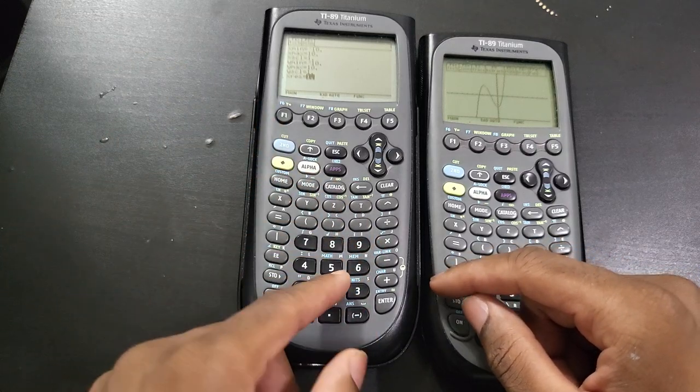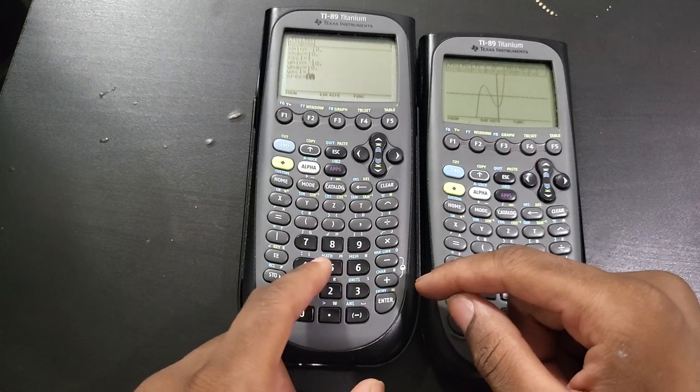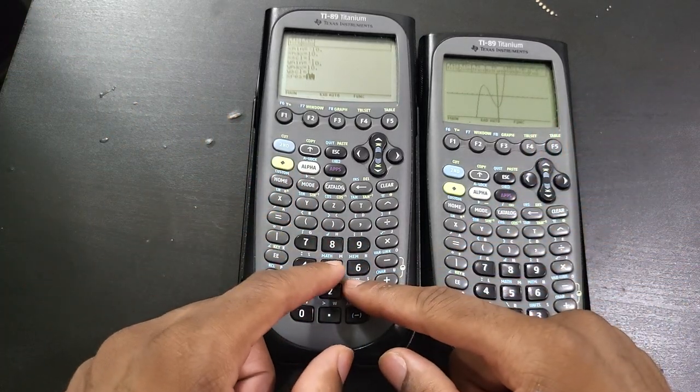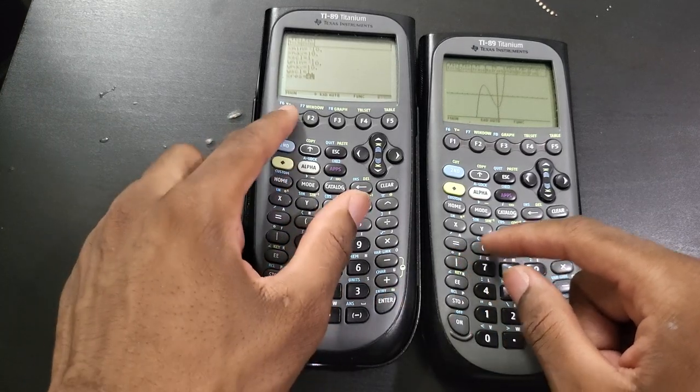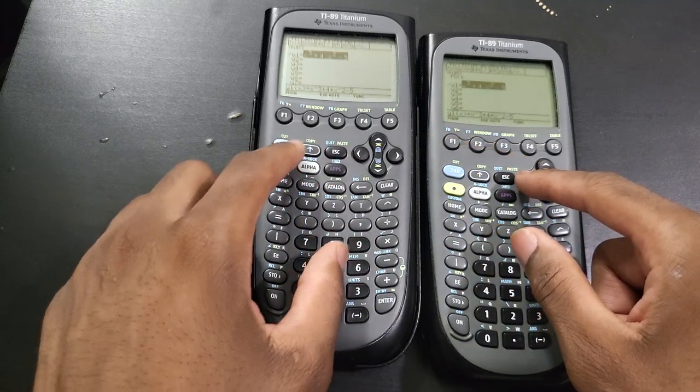the nicer your graph is going to look. So I like to set mine to anywhere between two or four. Let's just do four for now. And let's go back. And now let's try to graph them again.